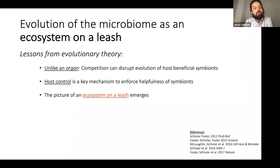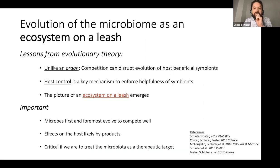I want to summarize the lessons that we've learned from evolutionary theory. A crucial aspect, I think, that is sometimes underappreciated in the microbiome world is that while the gut microbiome as a whole performs many metabolic functions just like a human organ, unlike an organ, the competition between the constituent parts—the species of the microbiome—can disrupt the evolution of host beneficial symbionts. My research has suggested that host control is a crucial mechanism that can evolve to enforce helpfulness of symbionts. In a more tangible phrase, the picture of an ecosystem on a leash emerges, where the host evolved abilities to restrain and constrict ecosystem dynamics of a complex community.